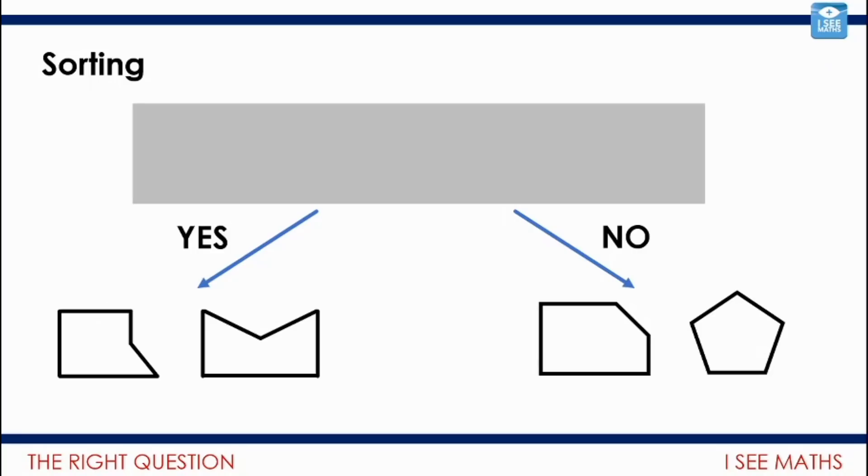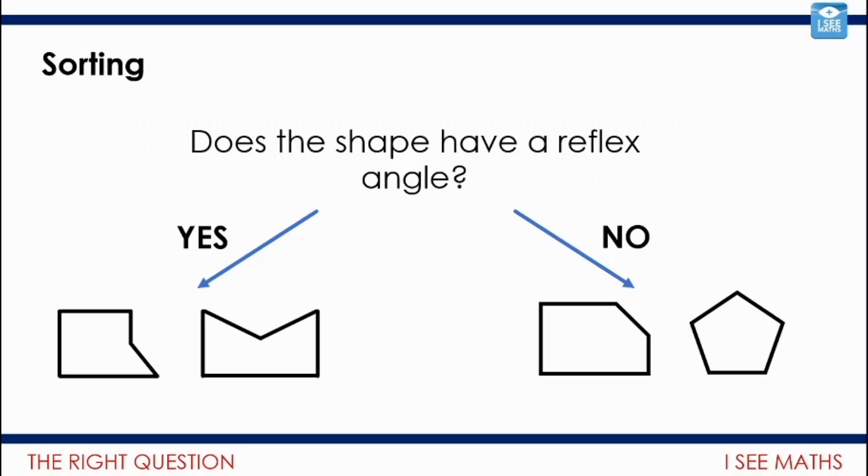What about this one? So I've moved some of the shapes around now. What question sorts the shapes correctly there into yes and no? Pause the video, see if you can find it out. Well, the question I went for was this: Does the shape have a reflex angle? Well, no for the examples on the right here, and yes for these two examples here. This angle is a reflex angle because it's more than 180 degrees, and so is this one. So that's how these shapes are sorted into yes and no.